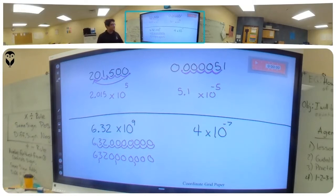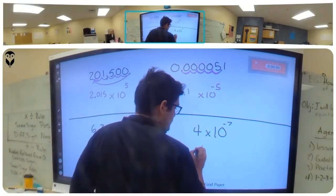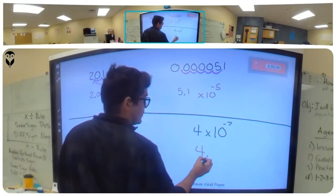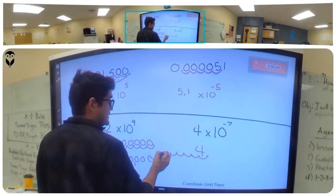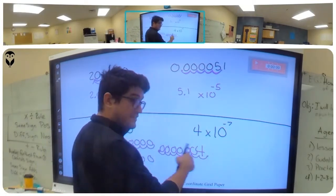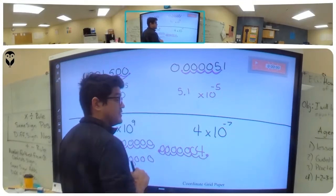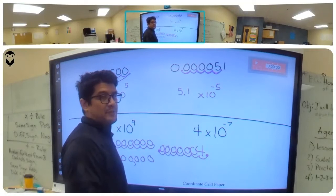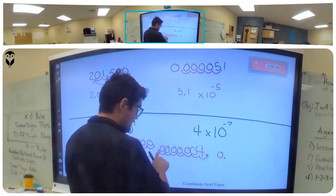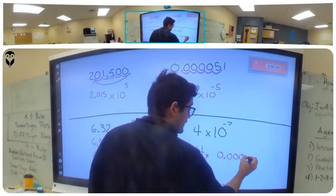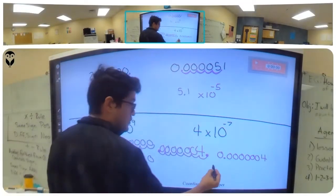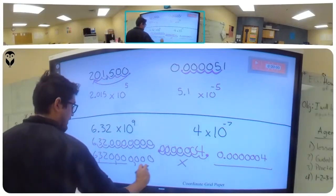Now this one: 4, and the decimal point is here. It's negative seven, meaning I'm going to make this number really small. So I move one, two, three, four, five, six, seven places. Having two decimal points in your answer is incorrect — you have to show where it ended up. Behind the decimal point there are six zeros, then a four. That's the correct answer.